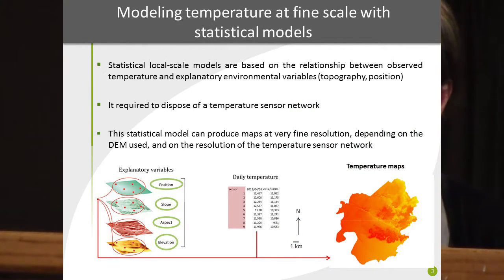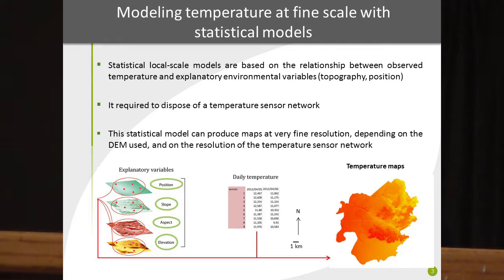The second method is modeling temperature at fine scale with statistical models. Statistical models are based on the relationship between observed temperature and explanatory environmental variables like topography or position. In this case, it is necessary to have temperature sensor networks. This statistical model can produce maps at very local scale, depending on the digital elevation model used and the resolution and density of the temperature sensor networks. In this study, we use the supervector regression to evaluate local temperature variability over the study sites.